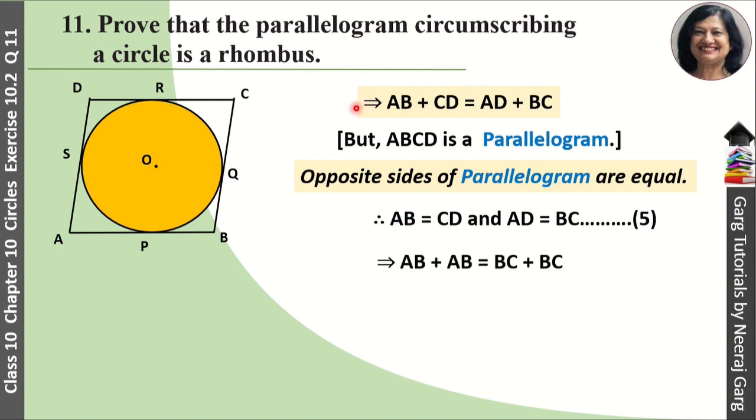This equation was the same. We put the values in this equation: CD we put AB, and AD we put BC. So this is our result. What has happened? AB plus AB, CD we put AB, and AD we put BC. So AB plus AB equals BC plus BC. Two AB equals two BC. So AB equals BC.